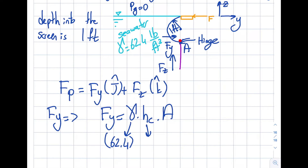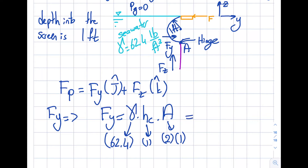For hc, note that the geometric center is determined from the vertical projected area — which is a rectangle. The height is two feet and the depth into the page is one foot. So hc is one foot, since the centroid sits at the midpoint of that two-foot height. The projected area A = 2 ft × 1 ft = 2 ft².